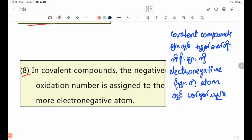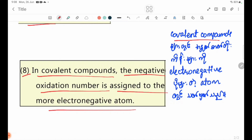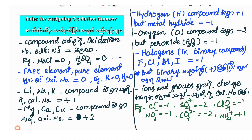Rule number eight: in covalent compounds, the negative oxidation number is assigned to the more electronegative atom. See you in the next lesson, bye-bye.